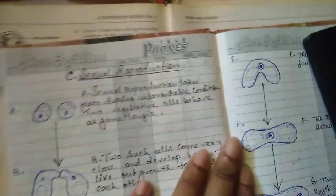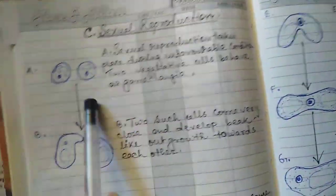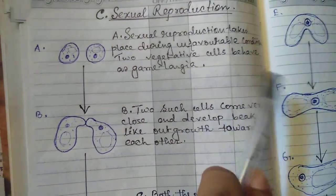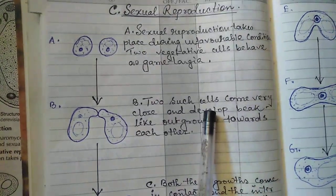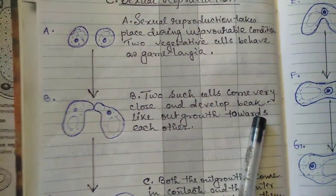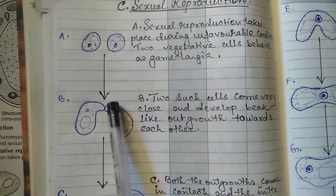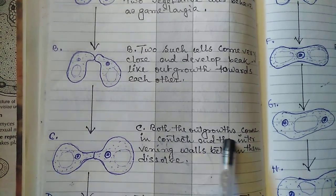The last method is sexual reproduction, which takes place by conjugation during unfavorable conditions. Two vegetative cells behave as gametangia. These two cells come very close and develop beak-like outgrowths toward each other, which form from the gametangia.